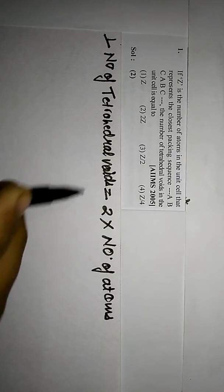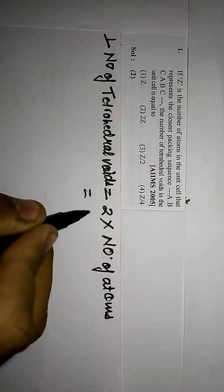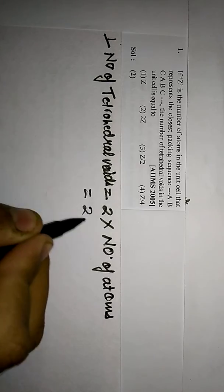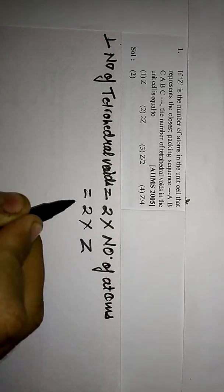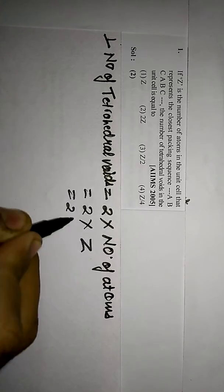The number of atoms in the unit cell is given as Z, so the number of tetrahedral voids equals 2Z. This is the correct option.